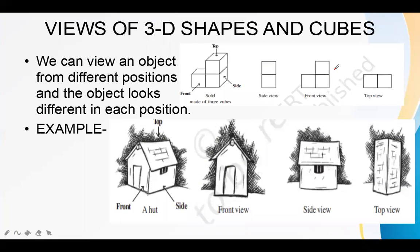Views of 3D shapes: we can view an object from different positions, and the object looks different from each position. For example, this hut's front view is this, but the same hut's side view is different from the front view. And the top view is different from both the front view and side view.